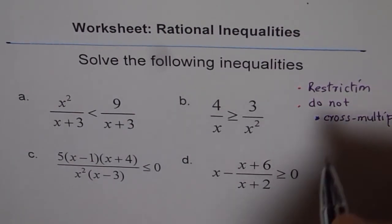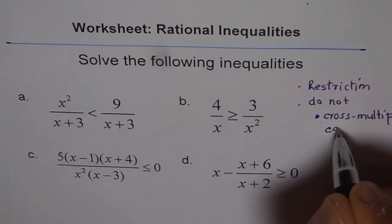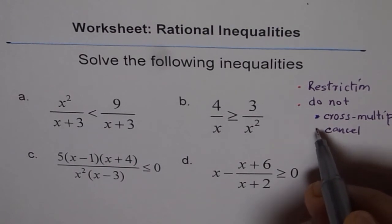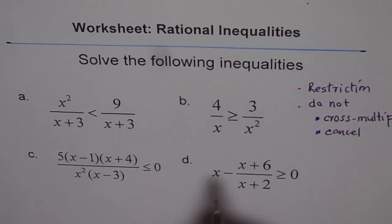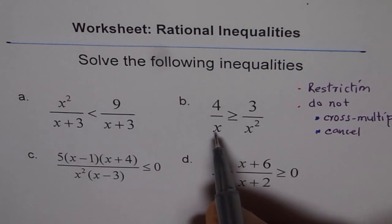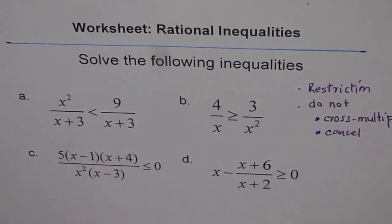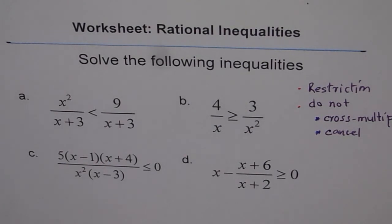And I will also say do not cancel at this stage when they are on opposite sides of inequalities. What I'm trying to say is do not cancel one x with this, do not cancel x plus 3 with x plus 3. What to do: write restrictions and then solve your problem. That should be the basis for doing this.